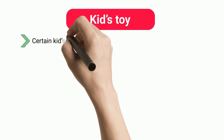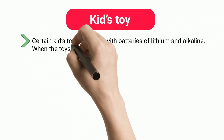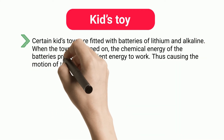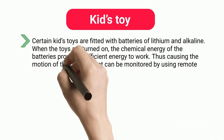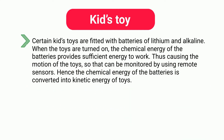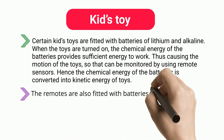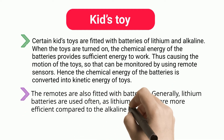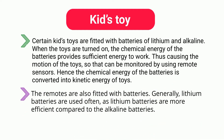Kids Toys. Certain kids toys are fitted with lithium and alkaline batteries. When the toys are turned on, the chemical energy of the batteries provides sufficient energy for them to work, causing the motion of the toys so that they can be monitored using remote sensors. Hence the chemical energy of the batteries is converted into kinetic energy of the toys. The remotes are also fitted with batteries; lithium batteries are used often as they are more efficient compared to alkaline batteries.